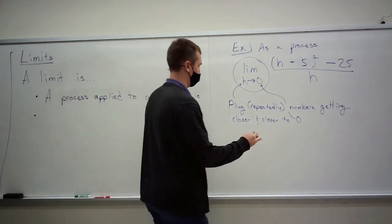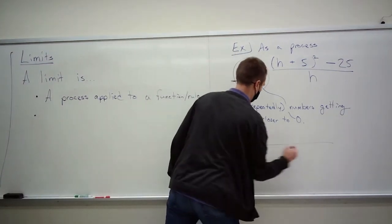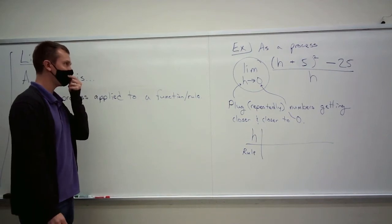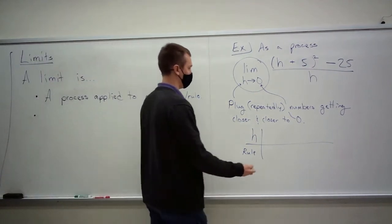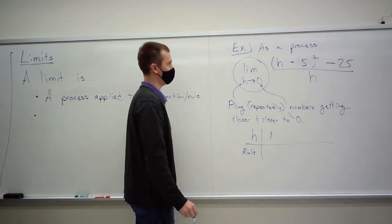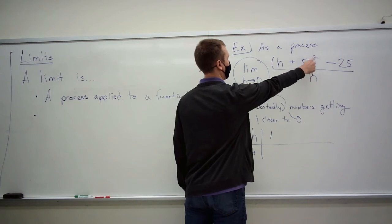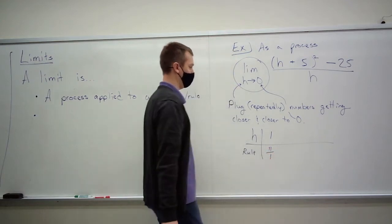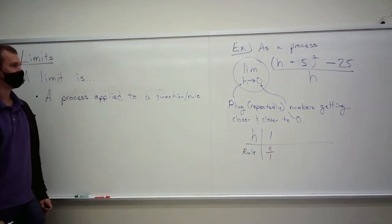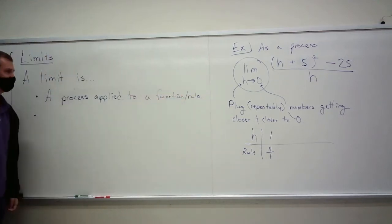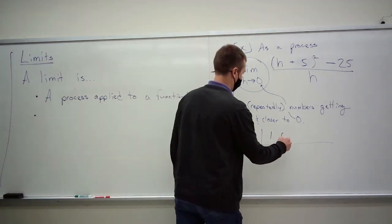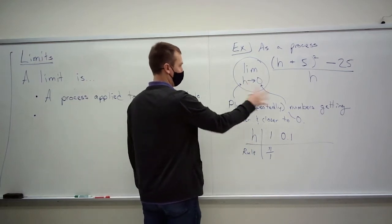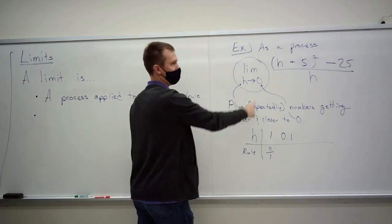This generally turns into a table, right? We've got numbers, we've got the rule or the function, and these are the outputs. So I can plug in lots of things, like 1. And what do I get? I get 5 plus 1 is 6, 6 squared is 36, minus 25 is 11, divided by 1. So the rule gives me that. A limit is what we're doing right now — we plug in numbers getting closer and closer to this one. That's what this arrow means: the process is this variable becoming this value.